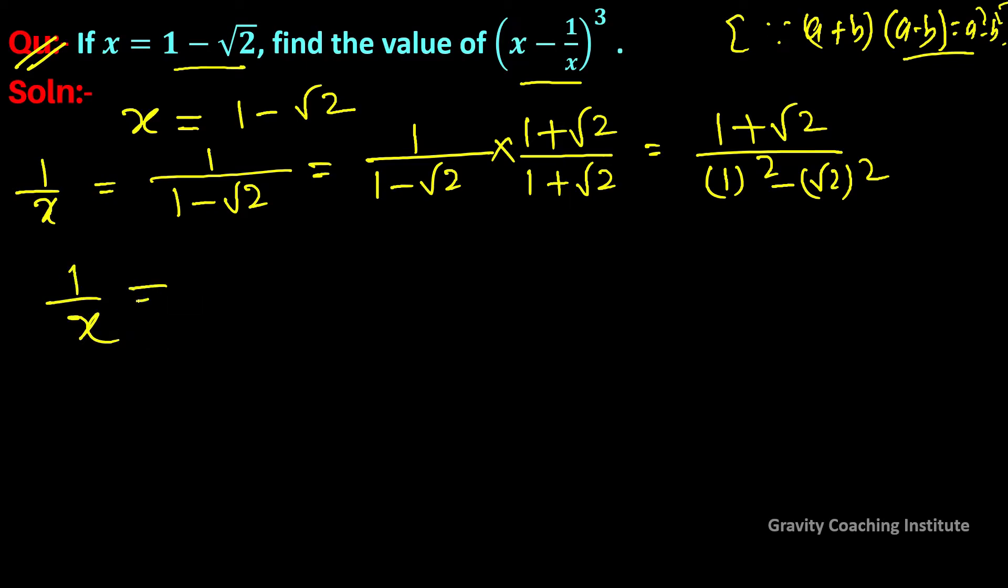So 1 upon x is equal to 1 plus root 2 upon 1 minus 2, equal to 1 plus root 2 upon minus 1, so minus 1 minus root 2. Therefore...